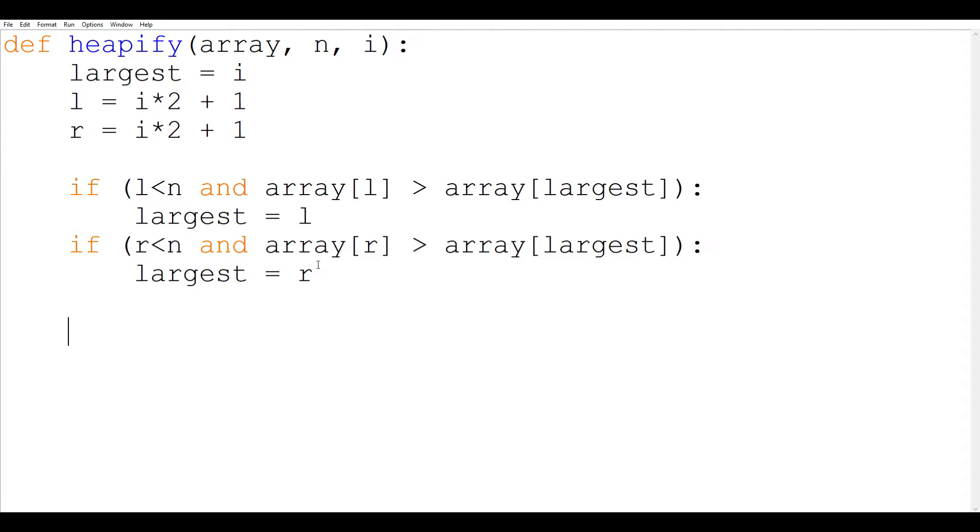So now we have got the largest among the three. All that is left is the swapping part. We are going to swap only if largest and i are not the same element. So if largest not equal to i, and today I'm going to teach you a shortcut to swap two elements.